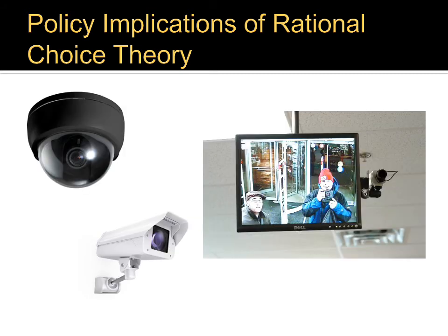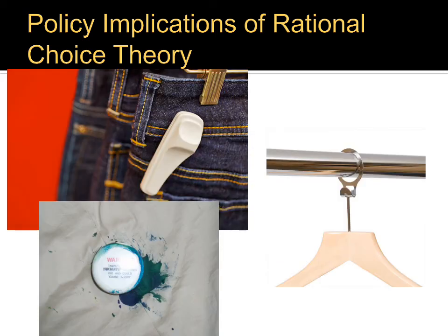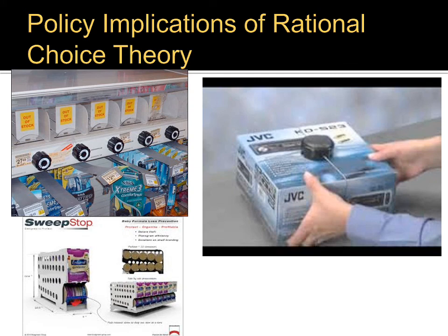Looking at this slide — for deterrence and rational choice theory, security cameras increase the risk. But in routine activities theory, we don't care about risk or reward; we care about a likely offender, a suitable target, and the absence of a capable guardian. So what are these security cameras? In a sense, they're actually a capable guardian — people see them and choose not to commit crime, or they could alert guardians to come check things out. What about all of these anti-theft devices? Well, these make the target no longer suitable. It's no longer a suitable target to take a pair of khaki pants because there's ink all over them. The target is no longer suitable to steal because of the physical structure of the displays.